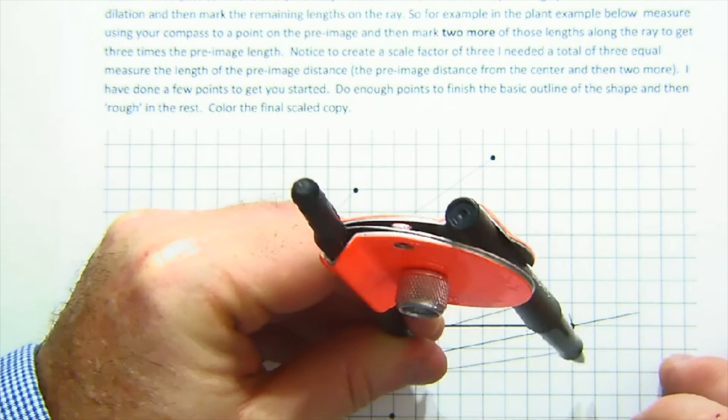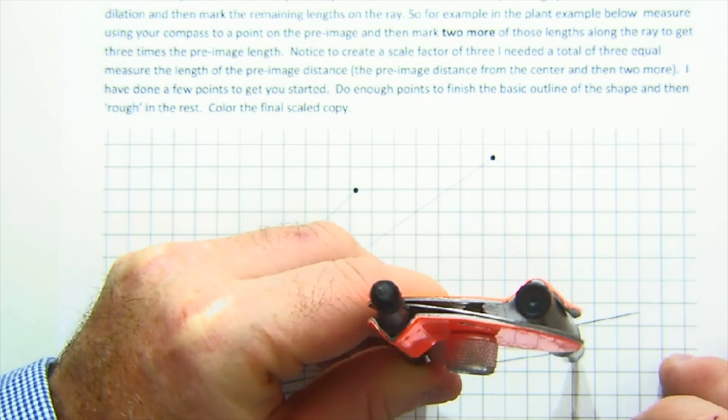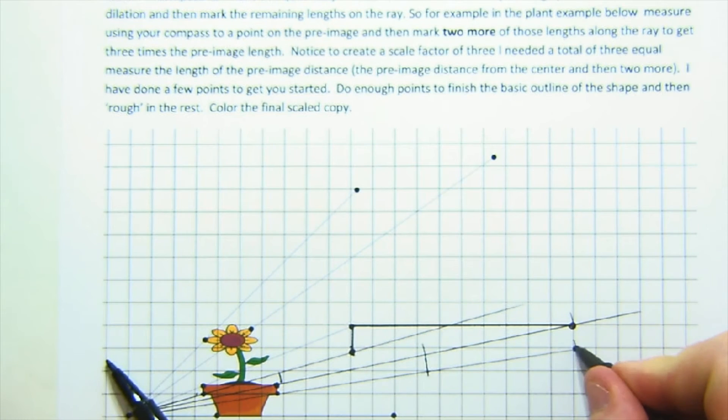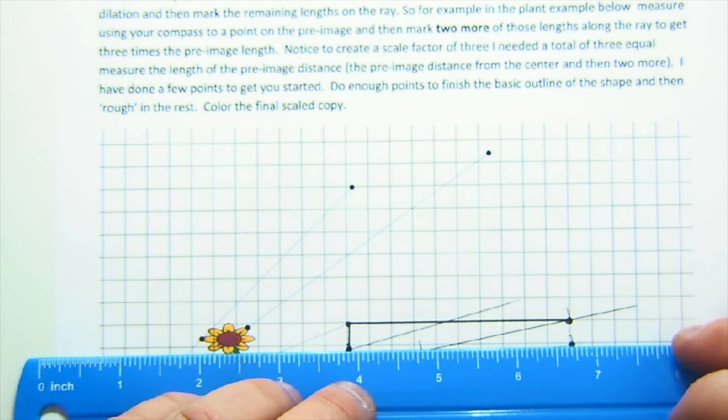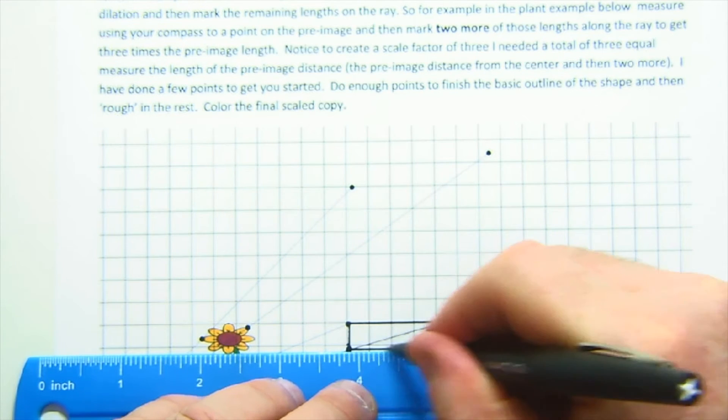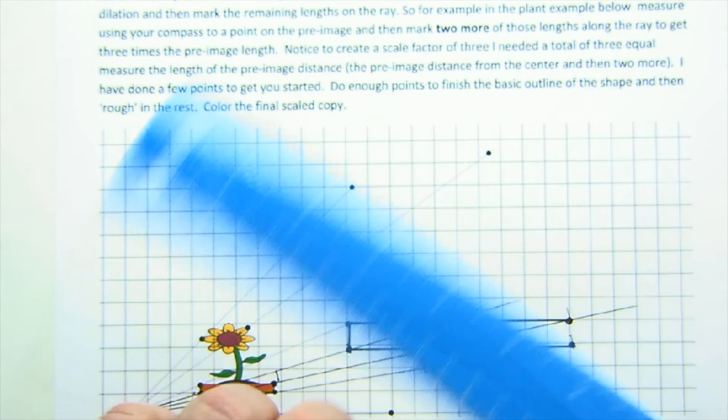It's got to stay on the right ray. Two, three, and that allows me to close out my upper part of my pot.